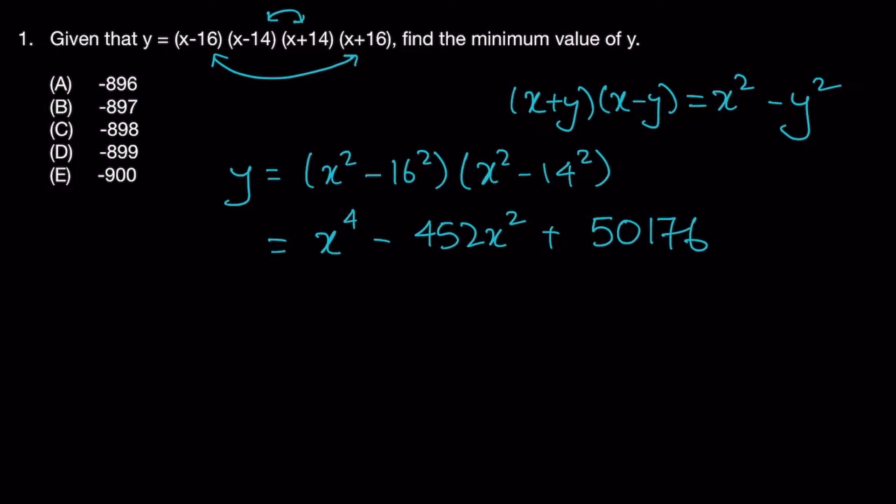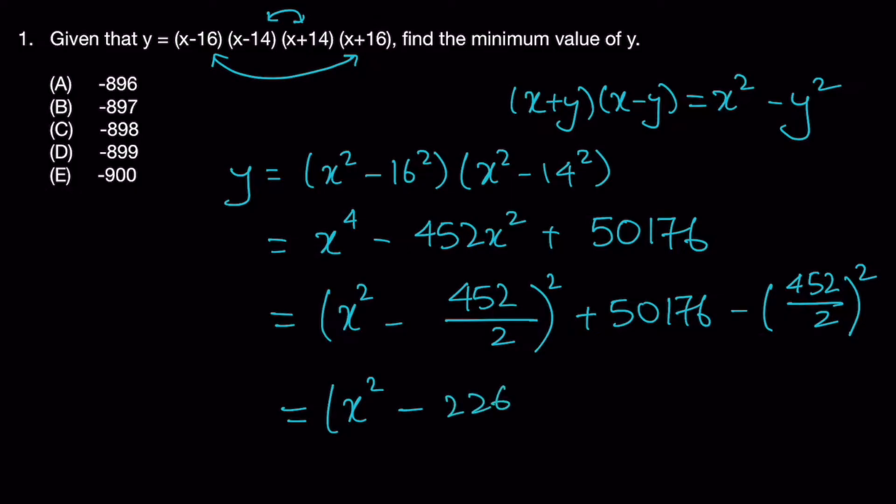Next step we'll use is completing the square. So it's x squared minus 452 over 2 whole square plus 50176. And we have to minus back the 452 over 2 whole square. And what we'll get is x squared minus 226 squared.